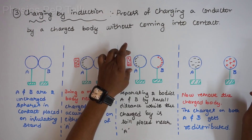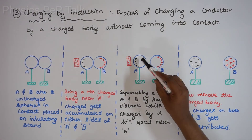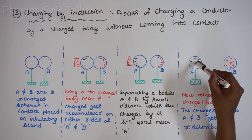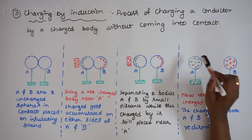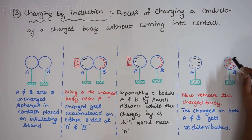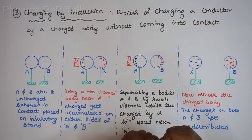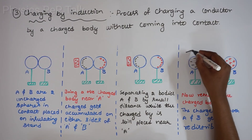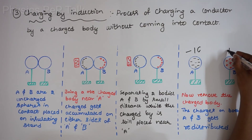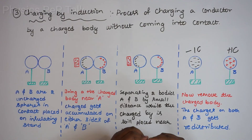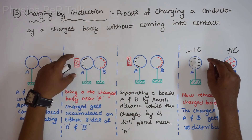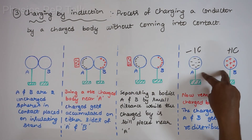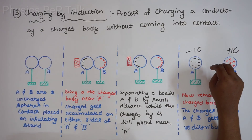Now I will separate the two spheres by a very small distance while keeping the positively charged body near sphere A. Then I will remove the positively charged body. The charges that were accumulated on the outer edge get redistributed throughout the surface. Negative charges distribute throughout sphere A, and positive charges distribute throughout sphere B. If sphere A gets charged by minus one coulomb, sphere B gets charged by plus one coulomb — same magnitude but oppositely charged. This type of charging is called charging by induction.